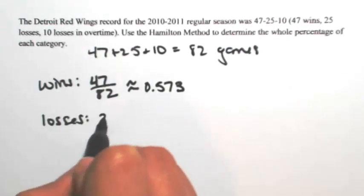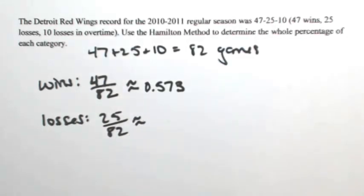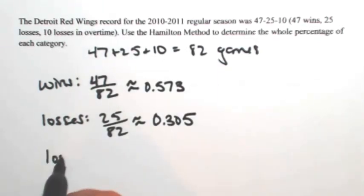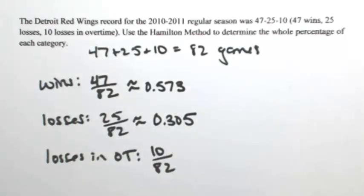Losses take up 25 out of the 82. So dividing that, I'm getting about 0.305. And then losses in overtime is 10 out of 82. So about 0.122.